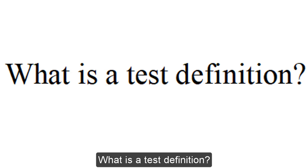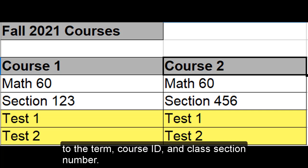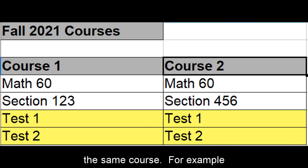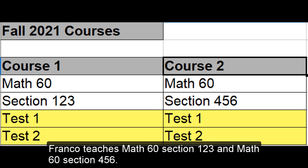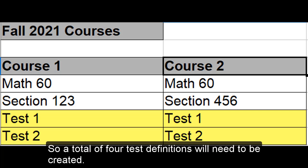What is a test definition? A test definition is an exam that is unique to the term, course ID, and class section number. Many courses often have multiple test definitions in the same course. For example, Franco teaches Math 60 Section 1-2-3 and Math 60 Section 4-5-6. Math 60 has two tests, including a midterm and a final, so a total of four test definitions will need to be created.